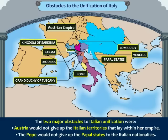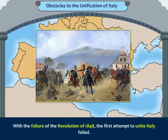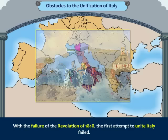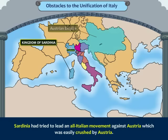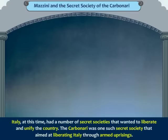The two major obstacles to Italian unification were: Austria would not give up the Italian territories that lay within her empire, and the Pope would not give up the papal states to the Italian nationalists. With the failure of the Revolution of 1848, the first attempt to unite Italy failed. Sardinia had tried to lead an all-Italian movement against Austria, which was easily crushed.